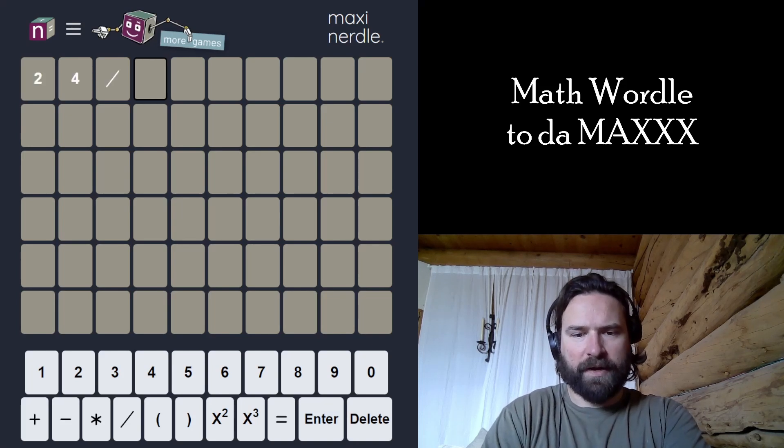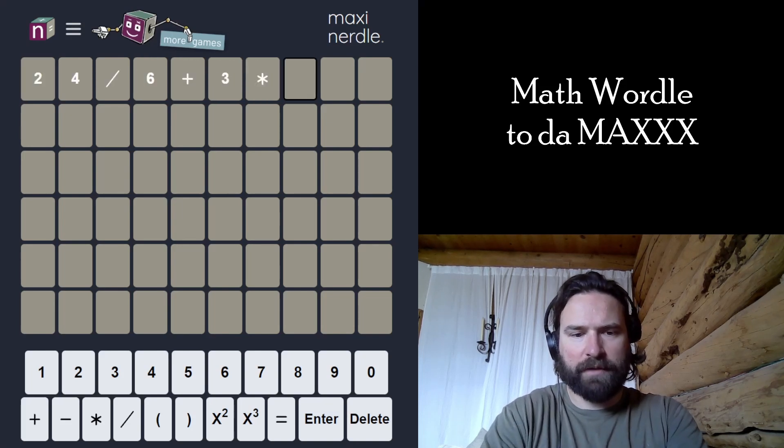All right, let's smash the maxi-nurdle at 24 divided by 6 plus 3 times 1 equals 7.